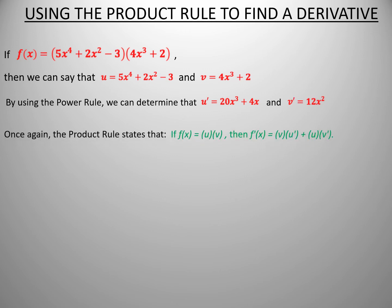Once again, the product rule states that if f of x equals u times v, then f prime of x equals v times u prime plus u times v prime. Thus, f prime of x equals the quantity 4x cubed plus 2 times the quantity 20x cubed plus 4x plus the quantity 5x to the fourth plus 2x squared minus 3 times the term 12x squared.